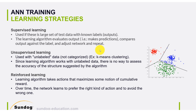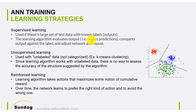Supervised learning is when we have a bunch of inputs and a bunch of outputs — that's why we call it supervised. We keep presenting all the input-output data to the network, and then the network learns through experience. The learning algorithm makes predictions, compares the predictions to the true output, calculates an error signal, and goes back to update the network weights. That's why we call it supervised fashion, and that's what we're going to use in several projects throughout this course.